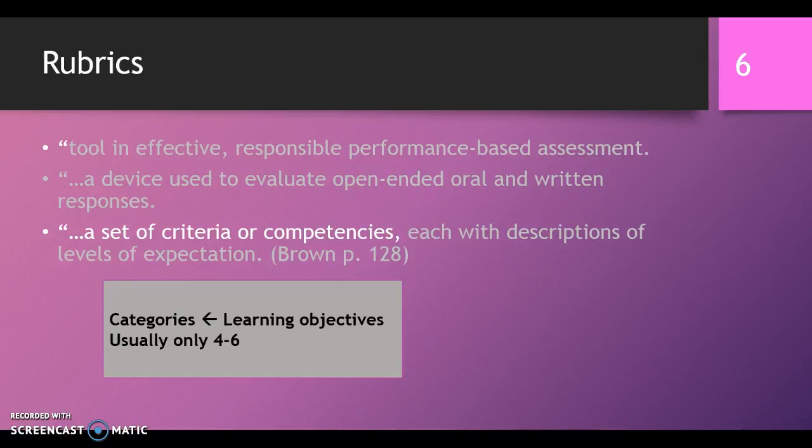Because this is a guideline, there might be good rubrics that have seven or even eight categories, maybe. But if it gets too many, 10, 12, it becomes really hard to assess on all of those different categories. It becomes just too much for the rater. And likewise, if you only have one or two categories, maybe you don't really need a rubric. You have to think about that.